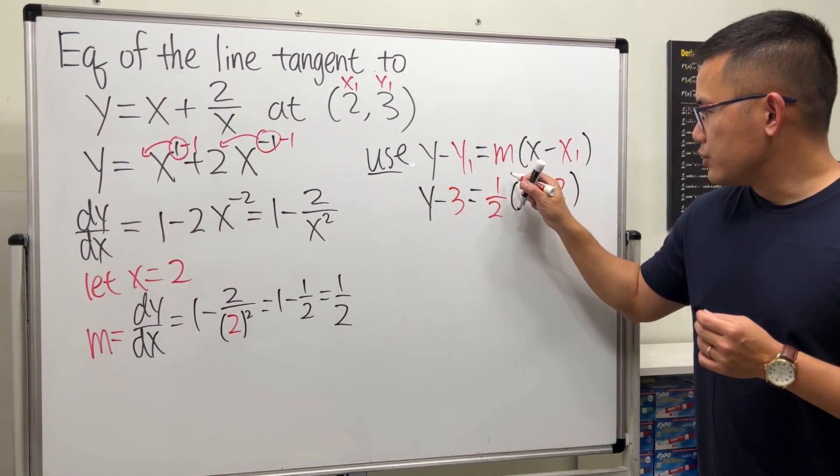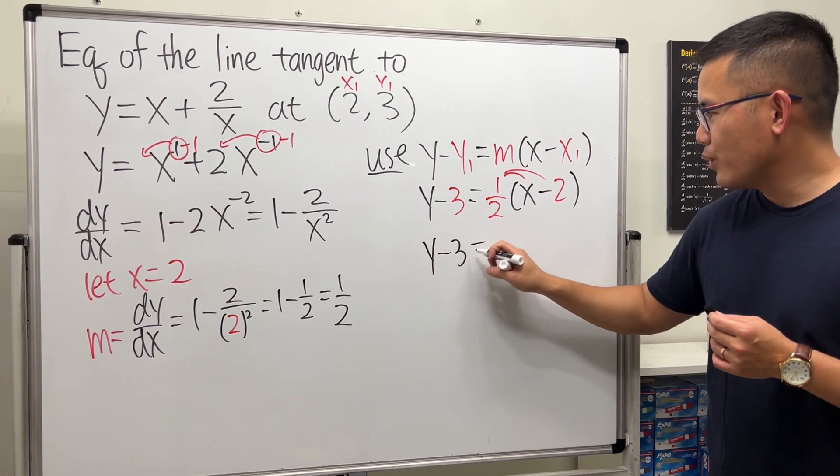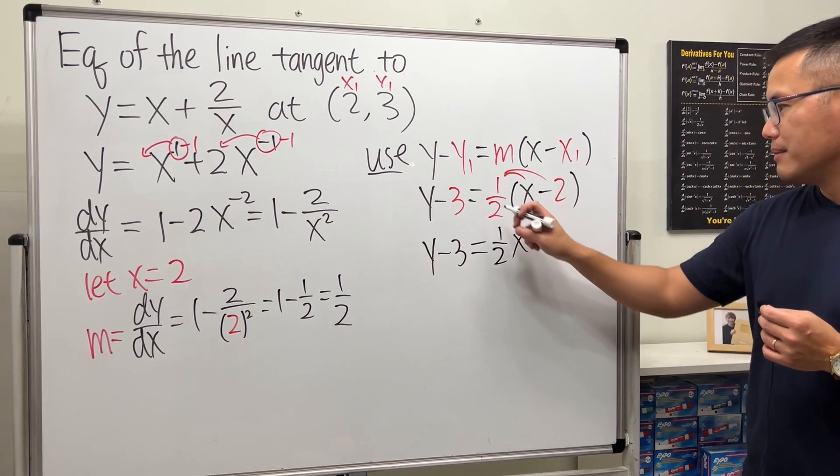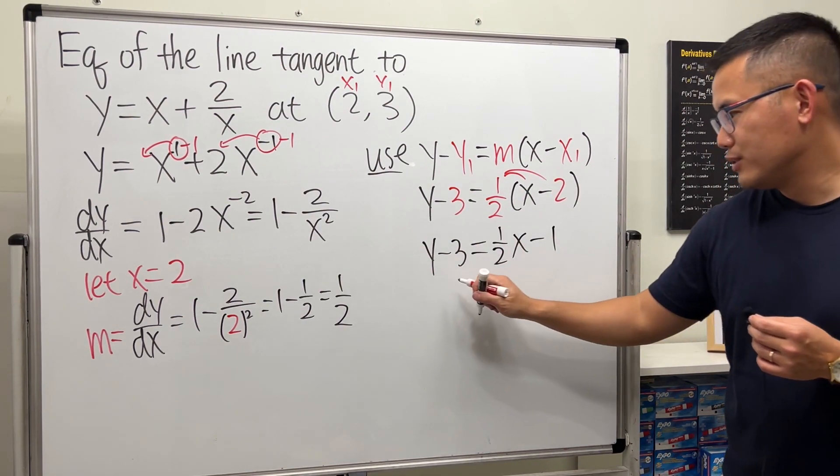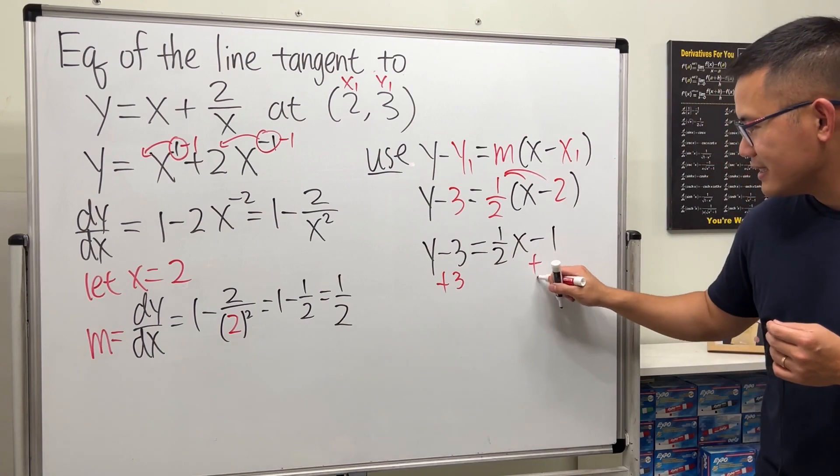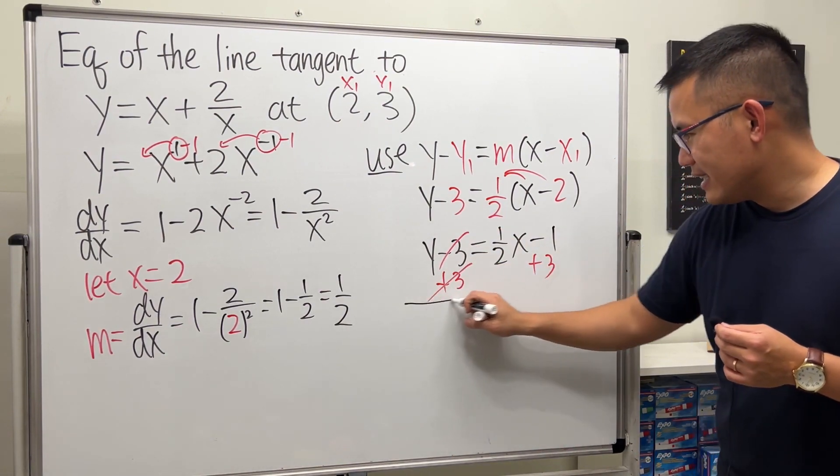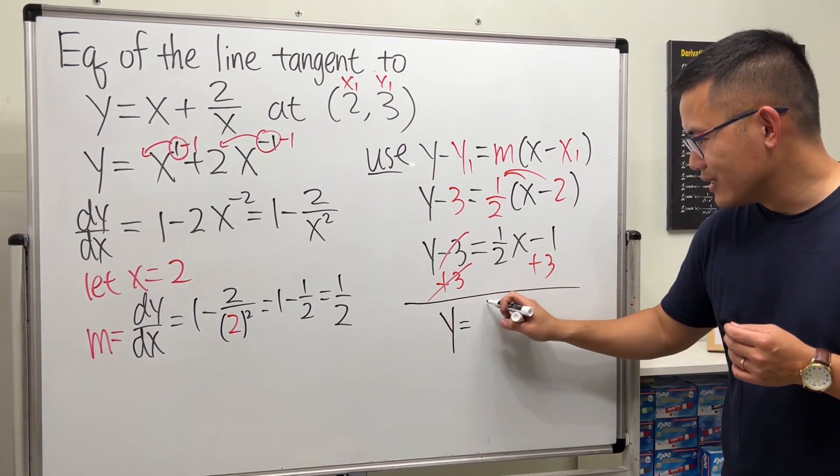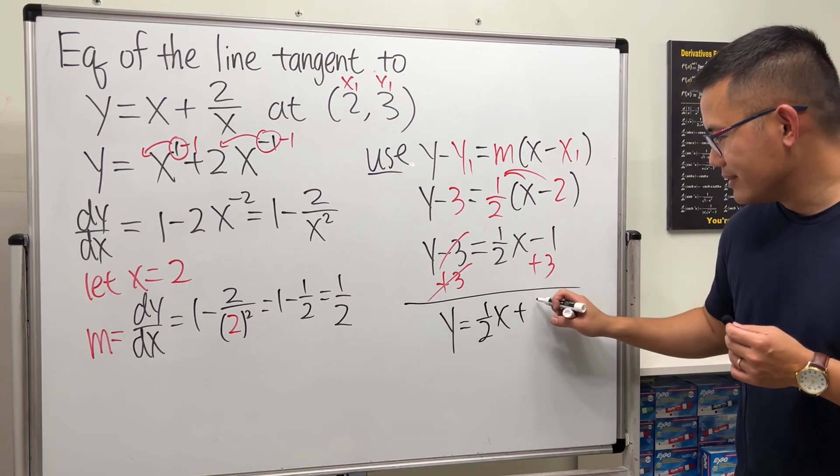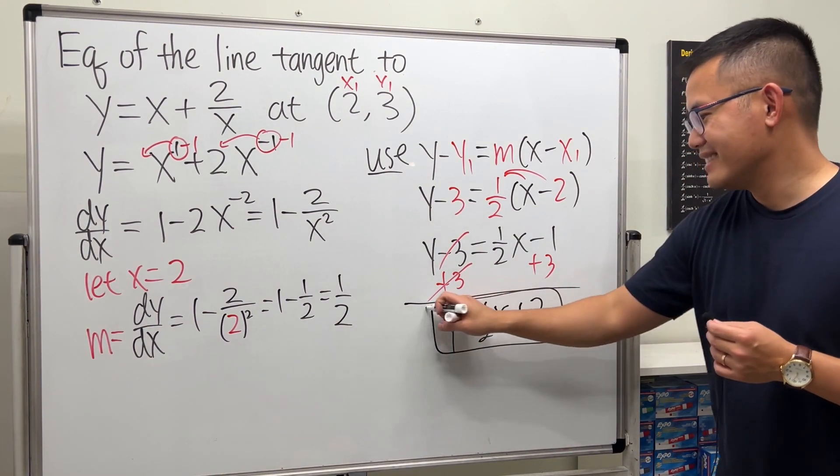Distribute: y - 3 = (1/2)x - 1. Finally, add 3 on both sides and we get y = (1/2)x + 2. There you have it.